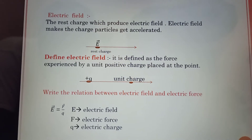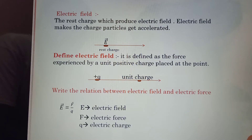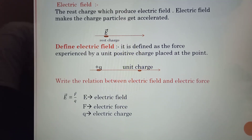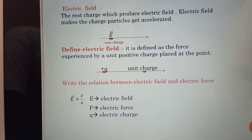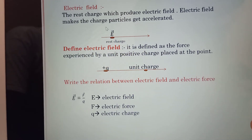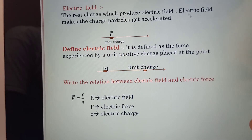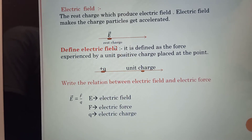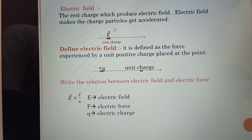Electric field. The resting charge produces the electric field. When an electric field is applied to charged particles like electrons and protons, the charged particles gain energy. The charged particles then get accelerated, moving along a straight line. The function of an electric field is to make charged particles accelerate.